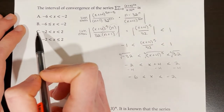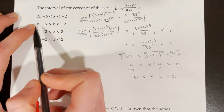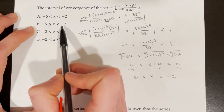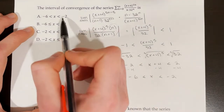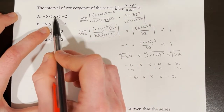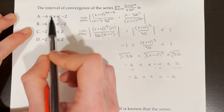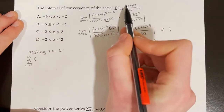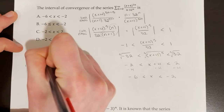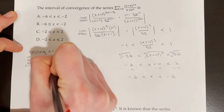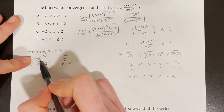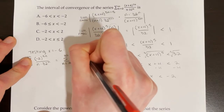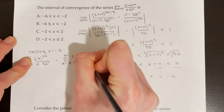This looks similar to both choice A and choice B, but we don't know whether the series converges when x equals negative 6 or negative 2. Since neither answer choice uses x less than or equal to negative 2, we only need to test x equals negative 6. Substituting: negative 6 plus 4 is negative 2, so we have negative 2 to the power of 5n over n times 32 to the power of n. Simplifying, negative 2 to the fifth power is negative 32, giving us negative 32 to the power of n over n times positive 32 to the power of n.